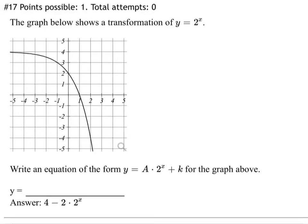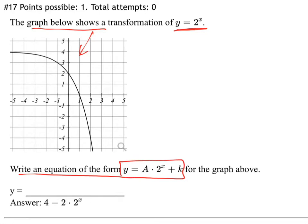Question number 17. We're looking at a graph they're giving us. The graph below shows some kind of transformation of y equals 2 to the x. They say write the equation in the form y equals a times 2 to the x plus k for the graph above. You can see the answer down here.